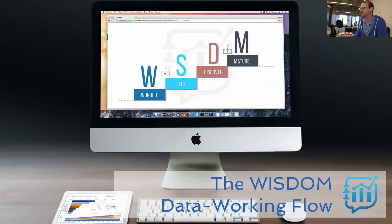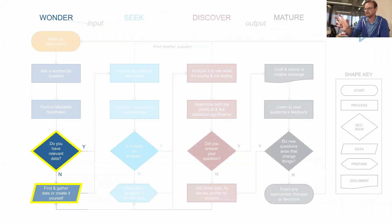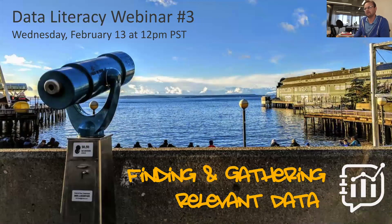That flow takes you all the way through to finding that story that you can mature and help others mature by telling data stories and making key decisions. Then the third webinar was about finding and gathering relevant data — how do you find relevant data, how do you go and gather it, or if necessary even create it yourself. So that leads us to what happens once you do have that data in your hands.